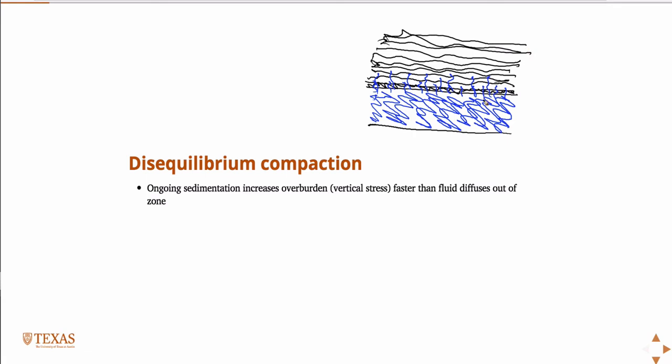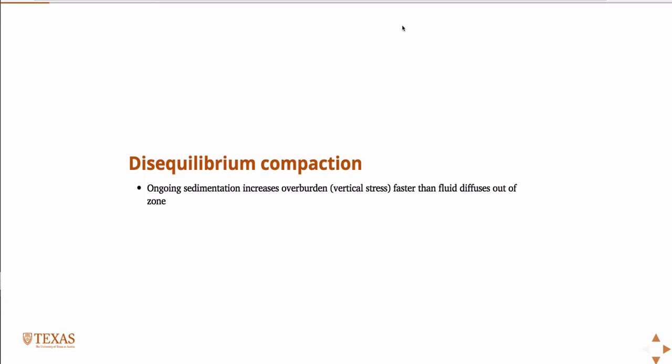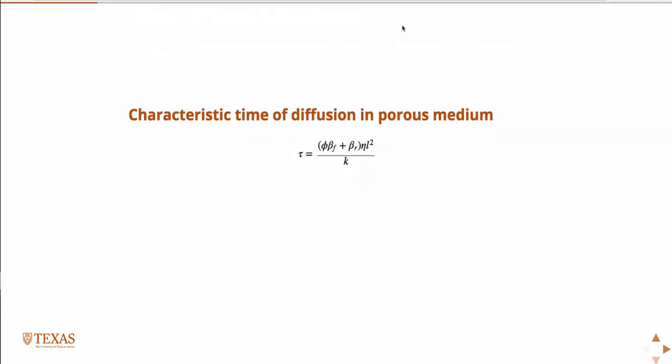At a high level, disequilibrium compaction is probably the most well understood mechanism of overpressure. It's certainly one we're really familiar with because it's the mechanism in the Gulf of Mexico. And why? The Mississippi River — rapid sediment deposition is the driving force.